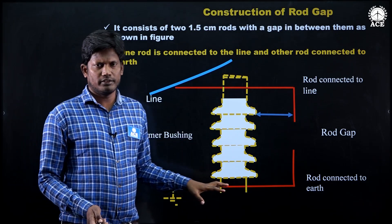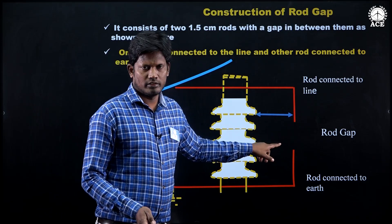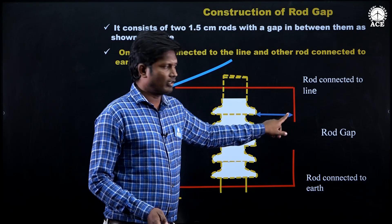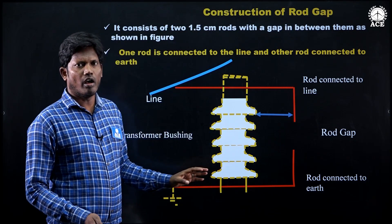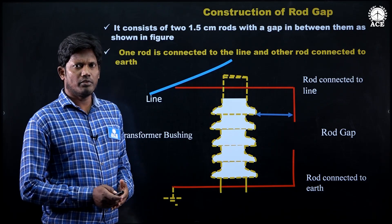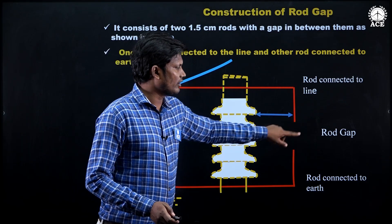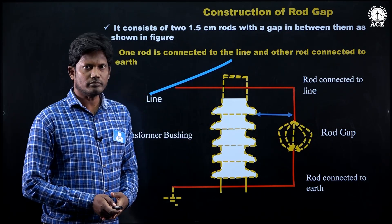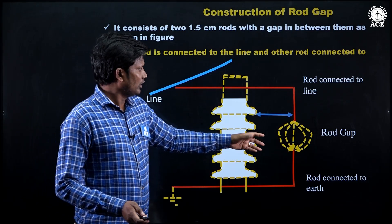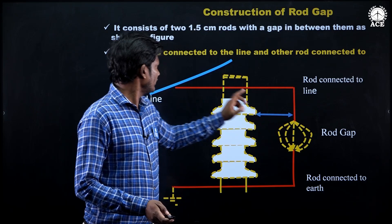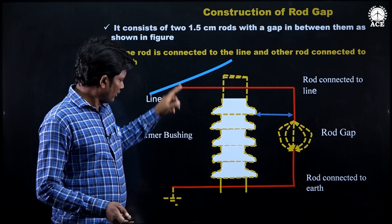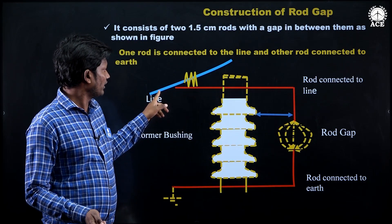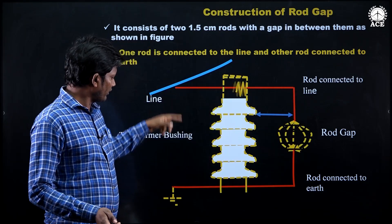Under normal condition, the gap is non-conducting because normal voltage is not able to break the air insulation between the gap, so no arc is formed. But high voltage breaks the air insulation between the gap and arc is formed as shown in the figure. When the arc has formed, the gap is conducting, and it conducts the high voltage from the line to ground through the rod gap. This high voltage diverts from line to ground.